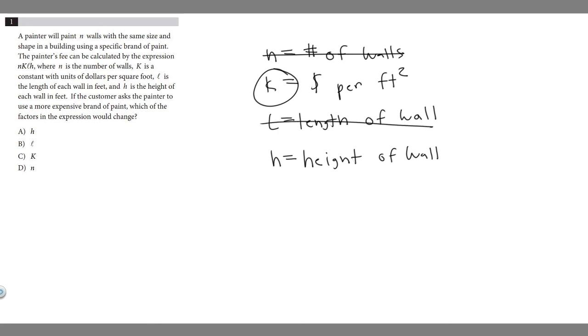And h is basically the same thing except it's the height. The height of the wall isn't going to change if we get a more expensive brand of paint. Only the cost for the paint. So h doesn't make sense. It seems like k is the only answer, so the answer to this problem is c.